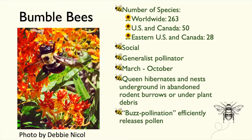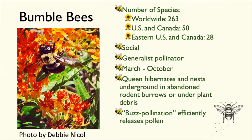Bumblebees use buzz pollination — also called sonication. They vibrate their thorax very rapidly while inside a flower, causing pollen to spew out and stick all over them. That's why they're so great at pollinating. They also have long tongues to reach deep into complex flowers, and they're physically strong — you can watch them really work a flower.